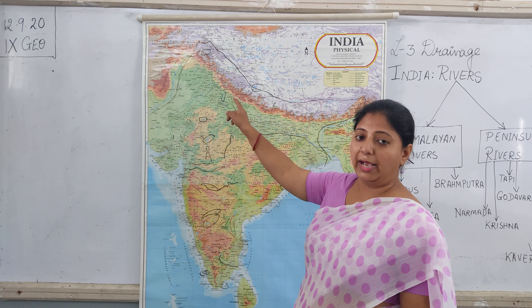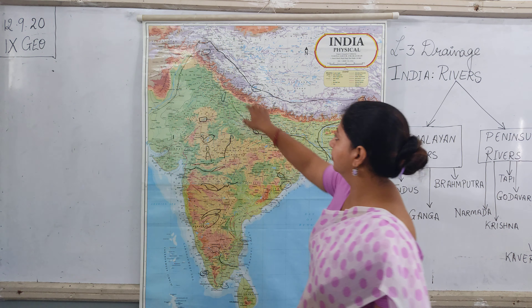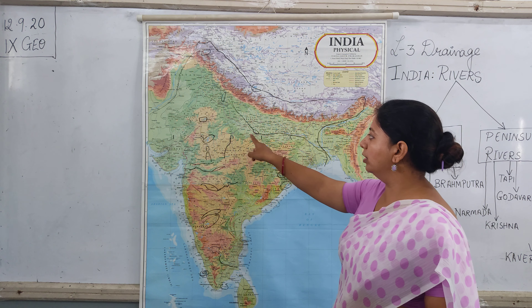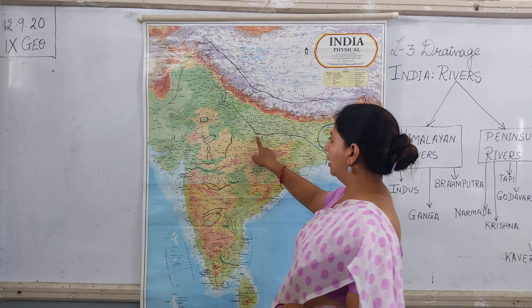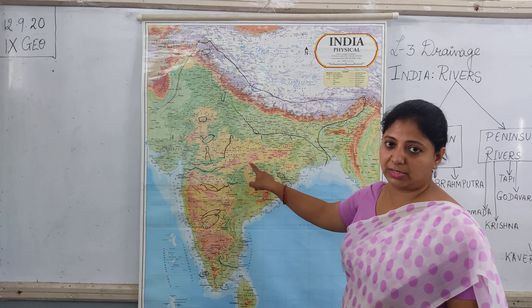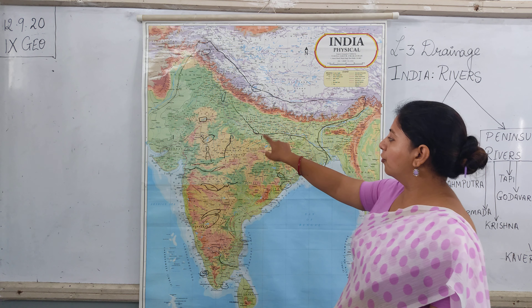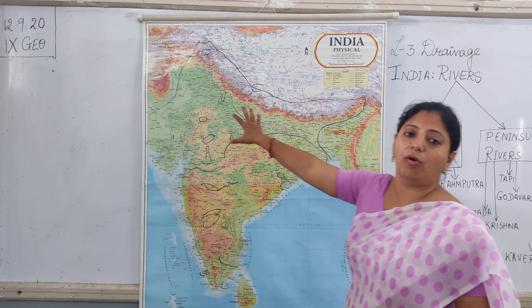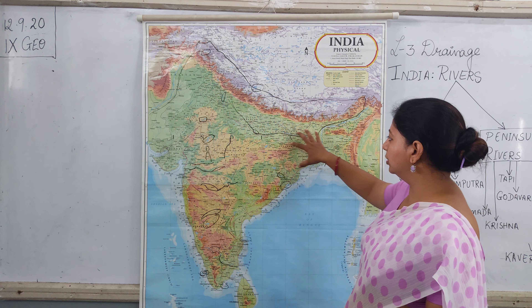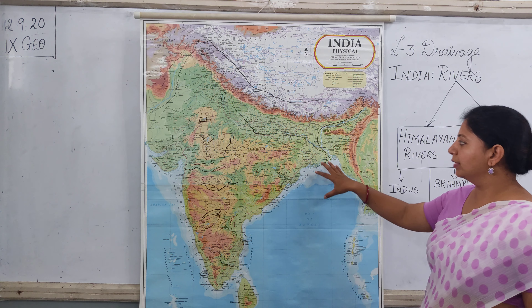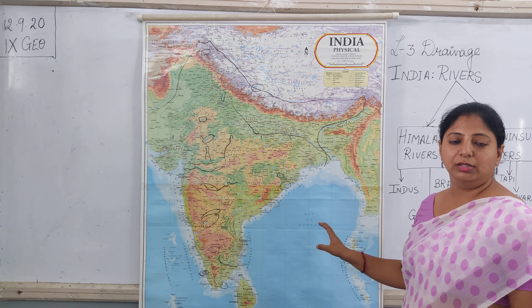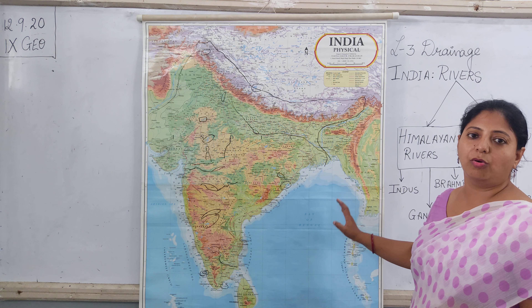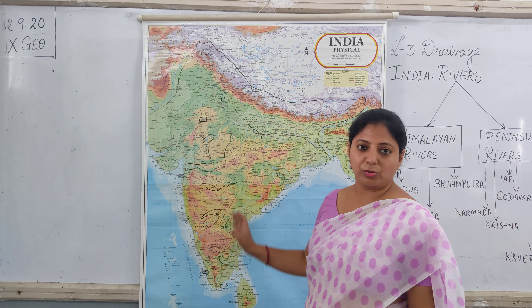The Ganga river originates from the Gangotri glacier, and here it is known as the Bhagirathi. This Bhagirathi flows down and near Allahabad it is joined by the Yamuna river system, and together they are considered as the Ganga. The river flows through the whole of the northern plains, enters Bangladesh, is joined by the Brahmaputra, and together they form one of the world's biggest deltas — the Ganga-Brahmaputra delta, or the Sundarbans delta.